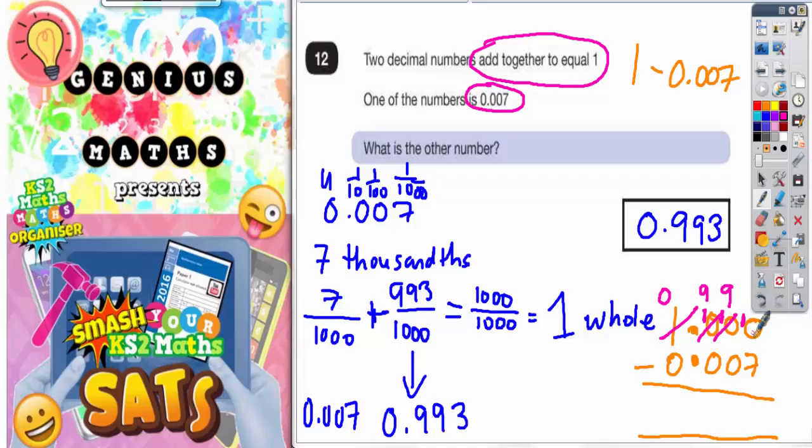Now we can do it. So ten take away seven is three, nine take away zero is nine, nine take away zero is nine, zero take away zero is zero. So again, doing it a completely different way, we've got 0.993. So that's correct.